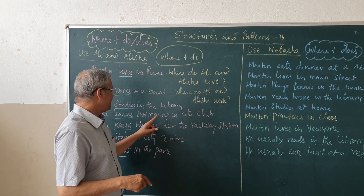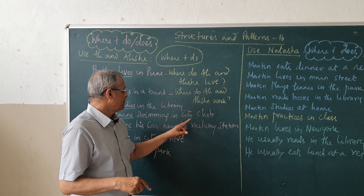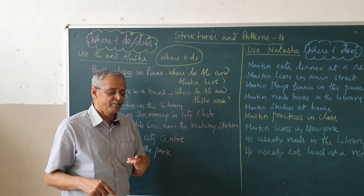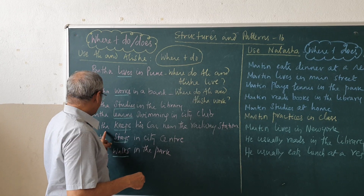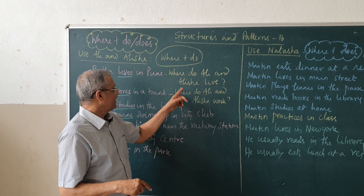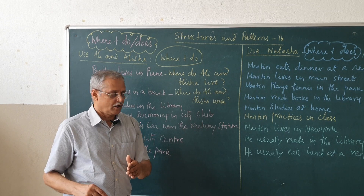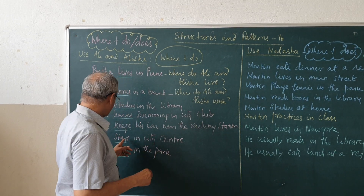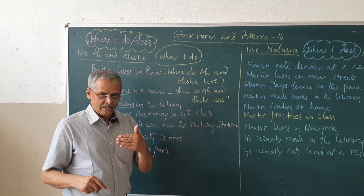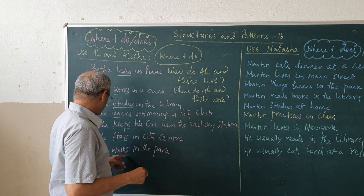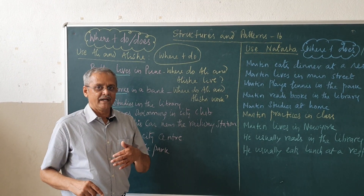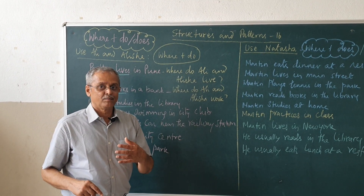Partha learns swimming in the city club — where do Ali and Alisha learn swimming? Partha keeps his car near the railway station — where do Ali and Alisha keep their car? Partha stays in the city centre — where do Ali and Alisha stay? Partha walks in the park — where do Ali and Alisha walk?